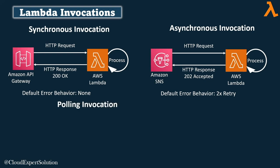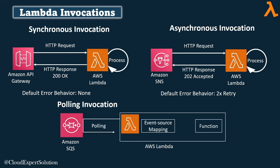There is a third type of invocation called polling invocation. For polling invocation, instead of the client pushing the request, Lambda will poll the client for requests. Inside Lambda, there is an event source mapping which polls the client — SQS in our case — continuously. If there are any messages or events, the client sends a batch of events to Lambda, and the Lambda function processes them. By default for polling invocation, Lambda keeps retrying until the processing completes successfully or the data expires. Services that Lambda can poll include Amazon DynamoDB Streams, Amazon Kinesis, Amazon MSK, and Amazon SQS.